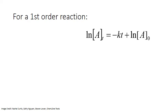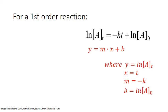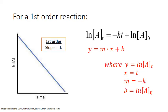The first-order integrated rate law also fits a straight-line relationship, y equals mx plus b. But this time, the y variable is the natural log of the concentration of the reactant A. x is still the time, and the slope corresponds to the negative of the rate constant. The y-intercept is the natural log of the initial concentration of A. So if we graph the natural log of concentration versus time, we would always get a straight line for a first-order relationship.